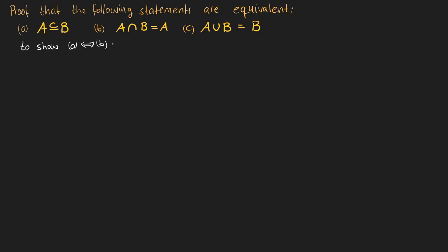This means we need to show that A is true if and only if B is true, and likewise B is true if and only if C is true. In this video we are going to use a circular chain of implications to prove the equivalence of those three statements. We assume A is true and show B is also true, then go from B to C and from C back to A. By that we can go from A to B and back, and also from B to C and back.